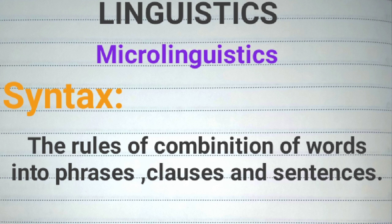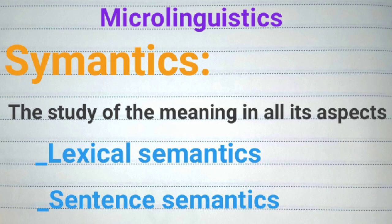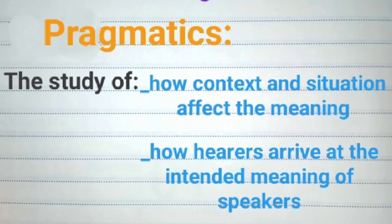Syntax is the study of the rules of combination of words into phrases, clauses, and sentences. Semantics is the study of meaning in all its aspects. Lexical semantics studies the meaning of words and sense relations such as synonymy, antonymy, and hyponymy. Sentential semantics is concerned with the meaning of sentences. Pragmatics is the study of how context and situation affects meaning and how hearers arrive at the intended meaning of speakers.